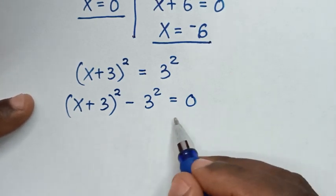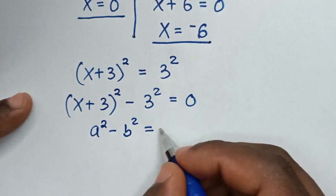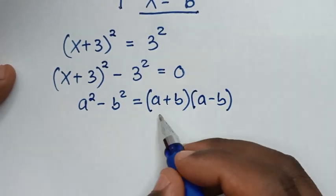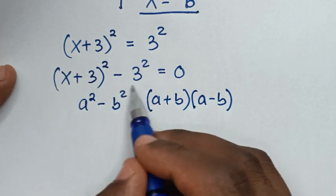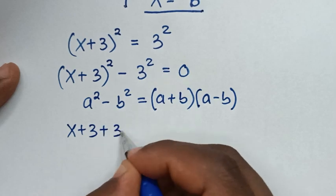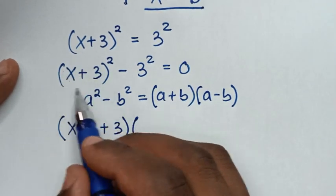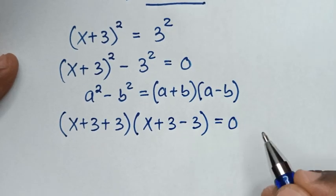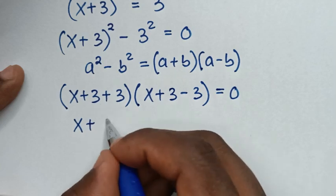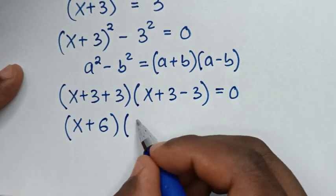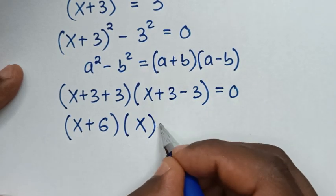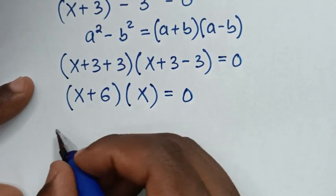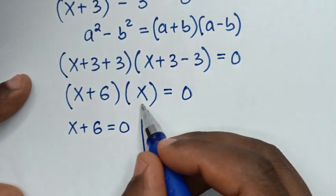We apply the difference of two squares rule: a² − b² = (a + b)(a − b). Applying this form: (x + 3 + 3)(x + 3 − 3) = 0, which gives (x + 6)(x) = 0. From here we have two solutions: first solution x + 6 = 0, and second solution x = 0.